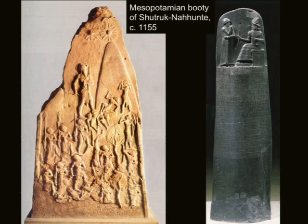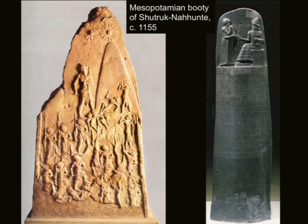Under the reign of Shutrukh-Nahunte, around 1155, we see the continuous sacking of Mesopotamia. In addition to consolidating Susa and Anshan under one major power, he conducts these raids into Babylon, bringing back a number of objects. This is the king under whom we see objects like the Naram-Sin Stele, the Code of Hammurabi, and all those Kudurrus — all these objects are taken as war booty by Shutrukh-Nahunte and brought back to Susa during this time.